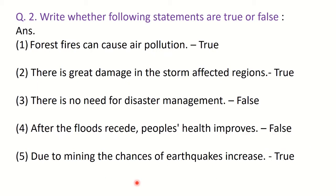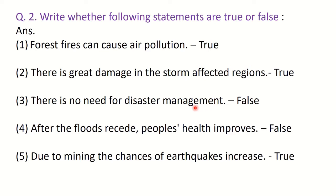Question number 2, true or false. First: forest fires can cause air pollution — True, because when there is a fire, smoke comes out. Second: there is great damage in storm-affected regions — True, because of storms there is great damage. Third: there is no need for disaster management — False, because there is a need for disaster management.